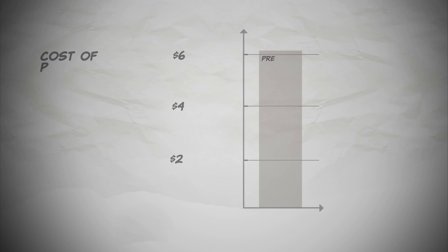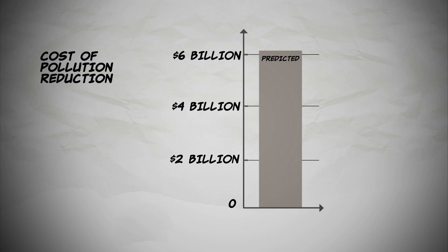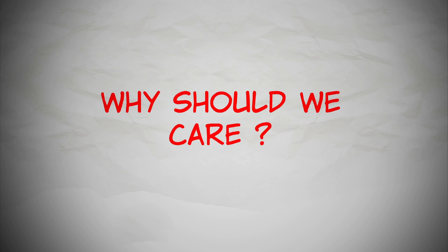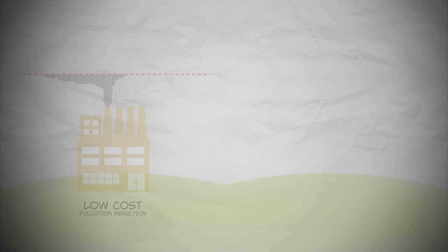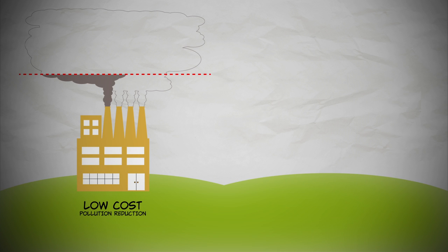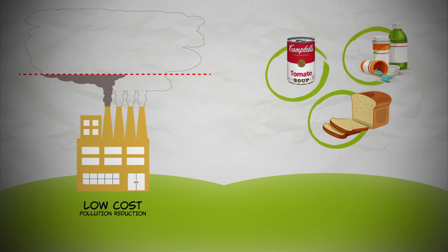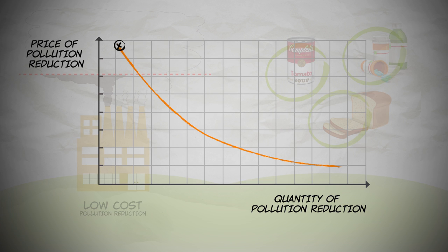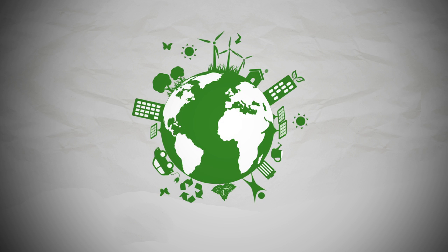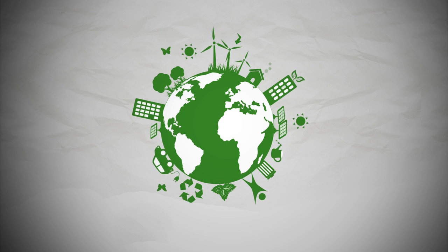But at a lower cost. In fact, the tradable permit approach worked so well, it reduced air pollution at a much lower cost than any expert had anticipated. Why should we care about the cost of reducing pollution? Spending less on reducing pollution means that we have more to spend on other goods. But also, don't forget the law of demand — the lower the price of pollution reduction, the more pollution we want to reduce. Tradable permits uses the invisible hand of the market to discover the lowest cost way of reducing pollution, and that's good for everyone.